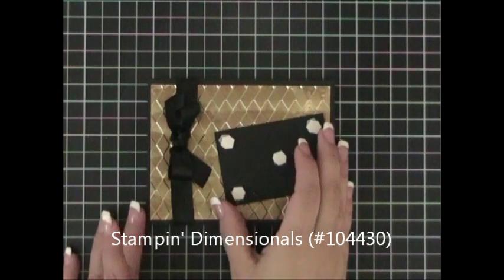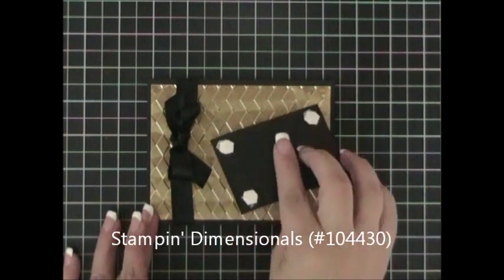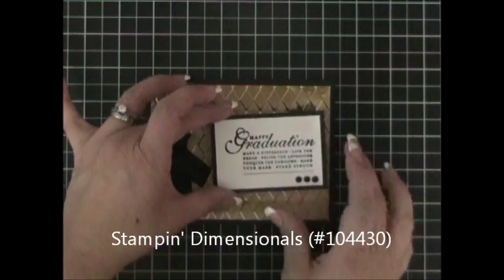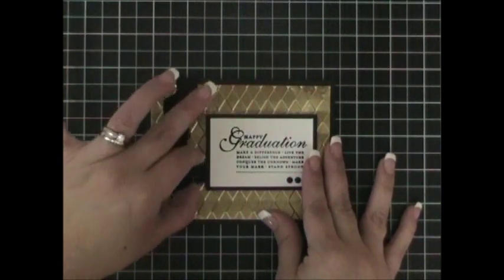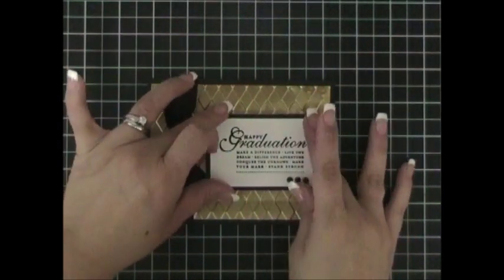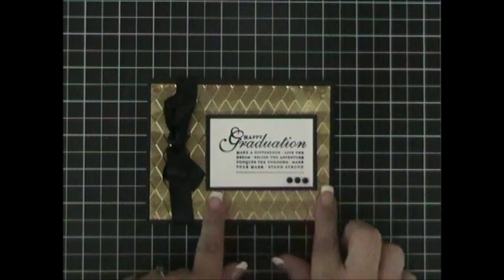So I peeled off the white film off the back of the stamping dimensionals and I placed it right there. And I just patted it down and I am done. Isn't that beautiful?